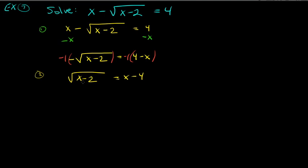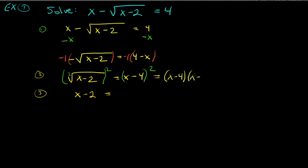Step two: square both sides. The left becomes x minus 2. On the right, be careful — this is NOT x squared minus 16. It's (x minus 4) times (x minus 4), which we must FOIL: x squared minus 4x minus 4x plus 16, giving x squared minus 8x plus 16.